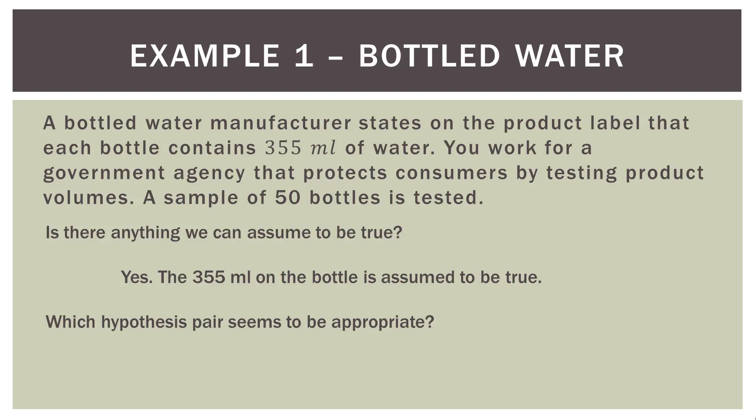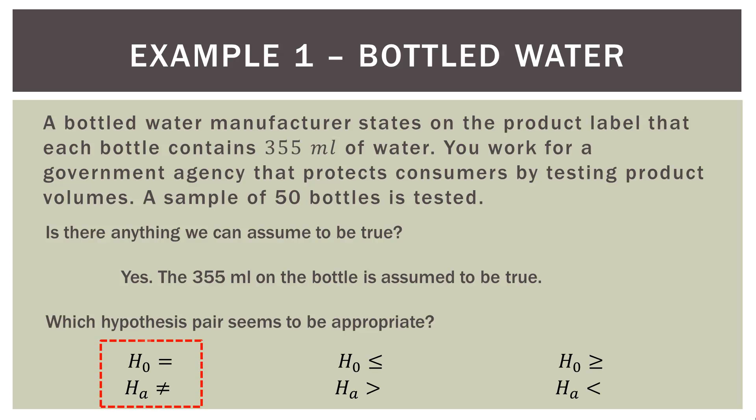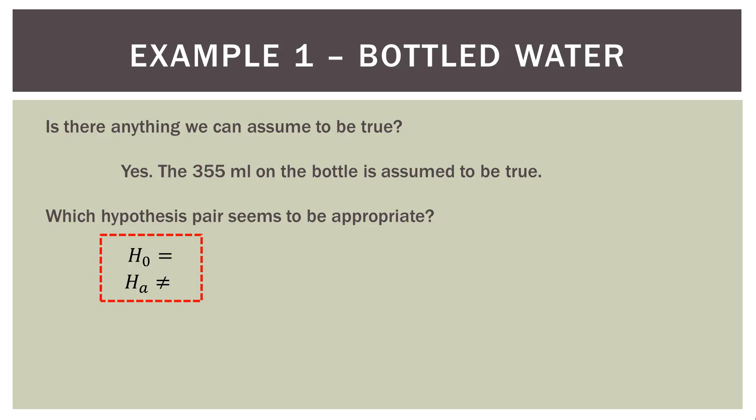Which hypothesis pair seems appropriate? The null is our assumption: it equals an average of 355 milliliters. The alternative would be the opposite of that. Our null is that the volume is 355 milliliters; therefore, the alternative has to be that it does not equal 355 milliliters — it could be more or less than that.